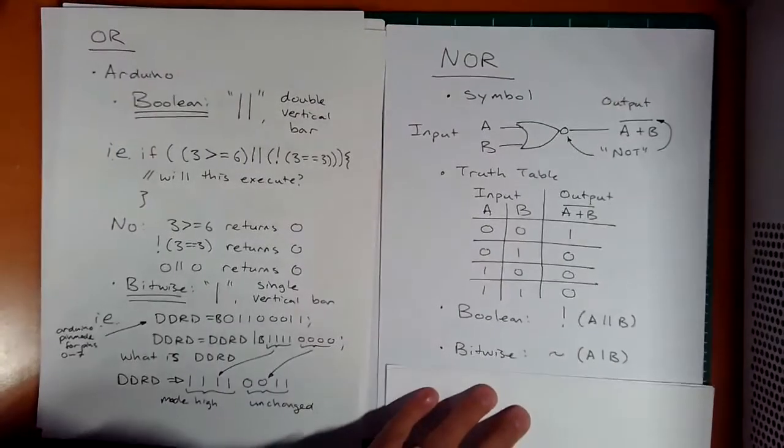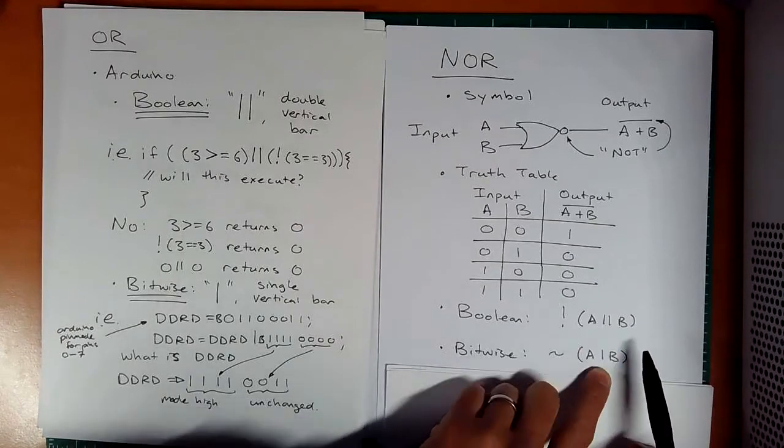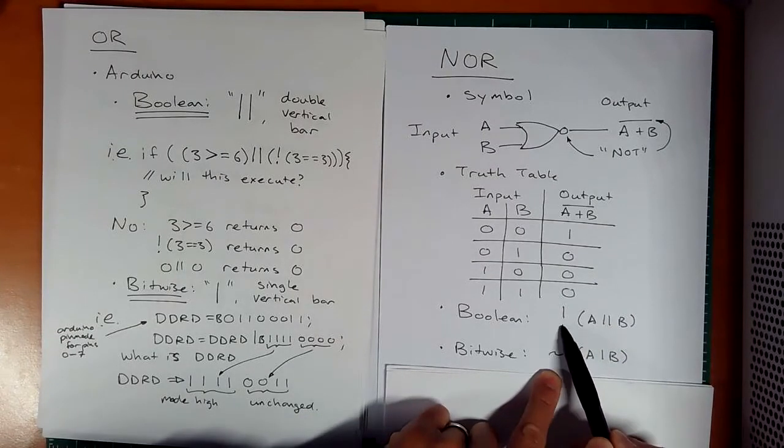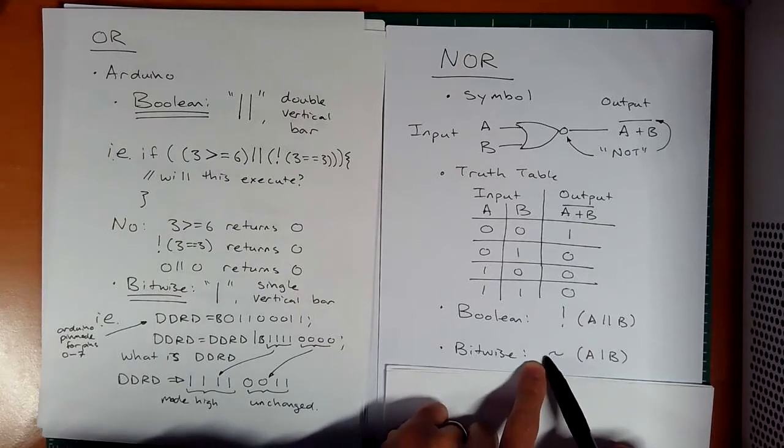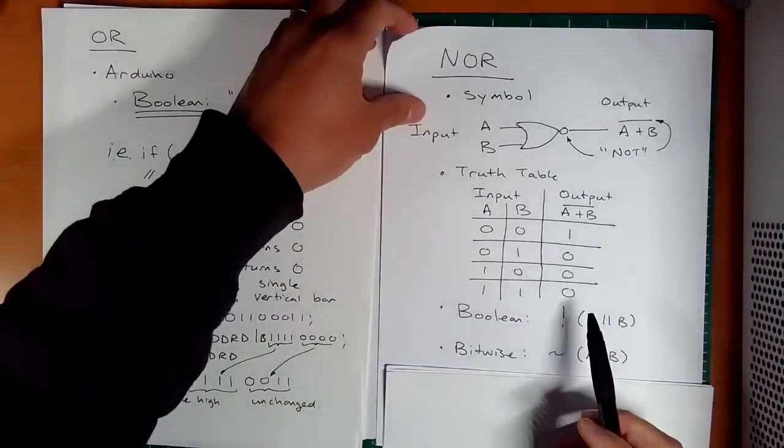How do you do the bitwise? Take the OR—either a double vertical bar or a single vertical bar—and just add a NOT to the outside. Here you're adding a bitwise NOT, a tilde, and here you're adding the exclamation NOT.